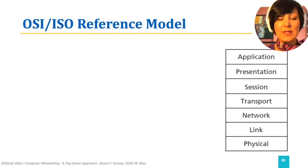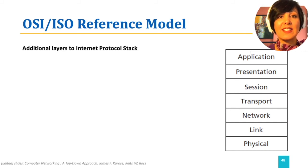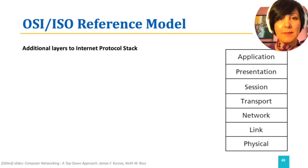Another service model, less in use now, is the seven-layer OSI reference model. In addition to the five layers in the Internet Protocol Stack, the OSI Open System Interconnection reference model has two additional layers — Presentation and Session — which both sit between the Transport and Application layers.